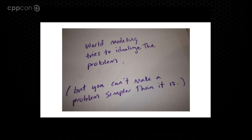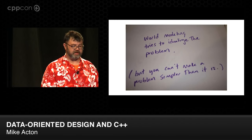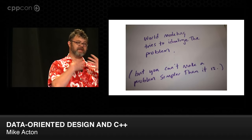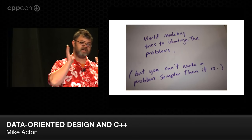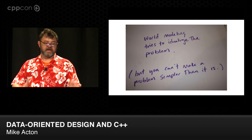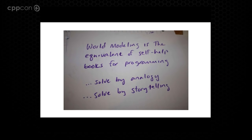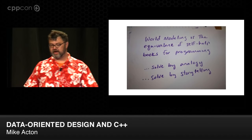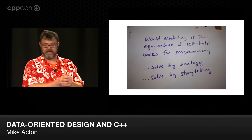So world modeling in general leads to monolithic, unrelated data structures and transforms, leading to all kinds of other problems you shouldn't have in the first place. From my perspective, world modeling is trying to idealize the problem away. We really need to understand the data and the hardware we're working on. You can't make a problem simpler than it actually is — the actual reality is you have this finite set of hardware and this finite set of data. I see world modeling as the equivalent of self-help books for programming: trying to engineer by analogy or by storytelling, as opposed to engineering by engineering.